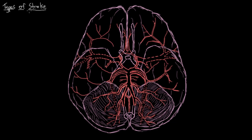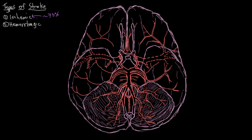There are two main types of stroke. Ischemic strokes, where brain tissue dies because it's not getting enough blood and therefore not enough oxygen to stay alive — often caused by some type of obstruction of a blood vessel. And hemorrhagic strokes, where a blood vessel in the brain bursts. Neither of them are good because they both cause brain tissue to die off. In this video, we'll look at ischemic strokes, which make up about 75% of all strokes.